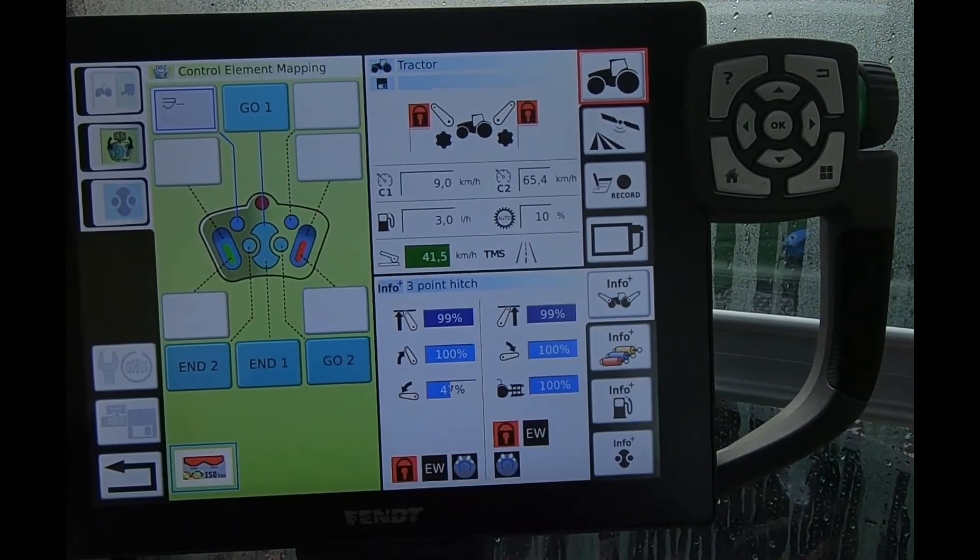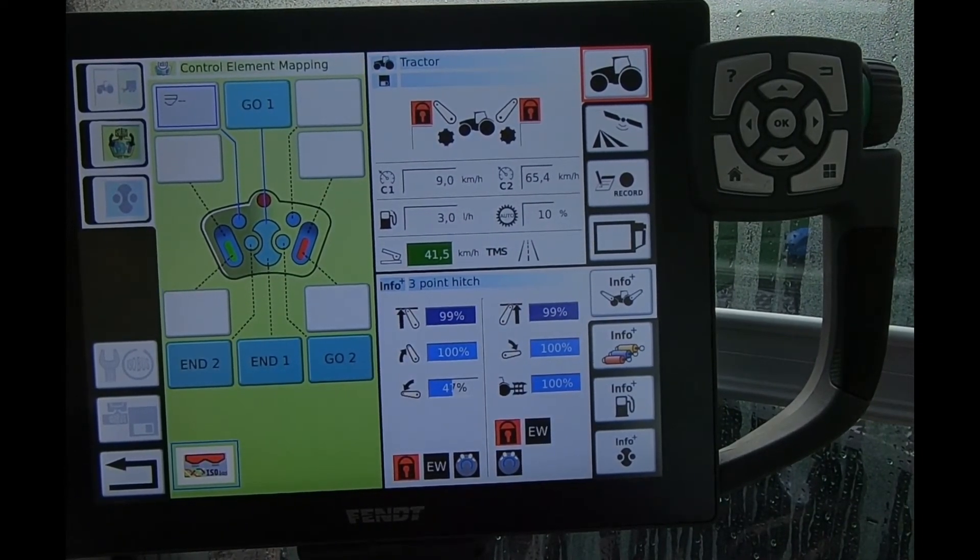So four, five, six buttons on those. The only ones I can assign the ISOBUS control to, but then I can still utilize my go end sequence.